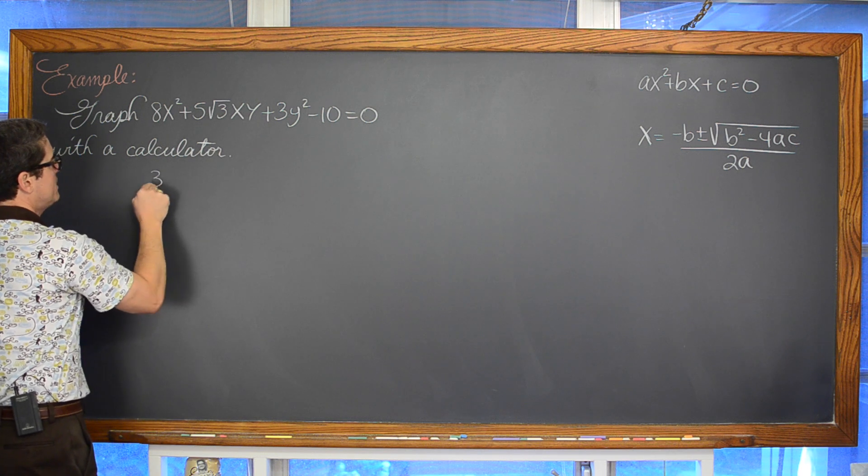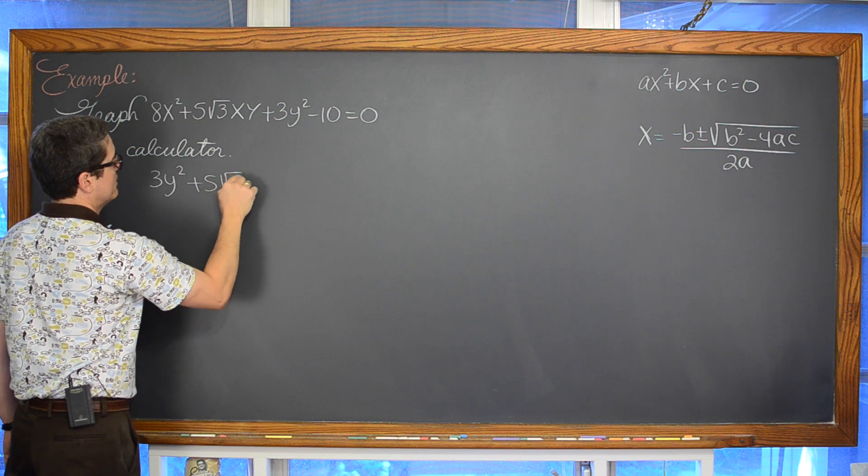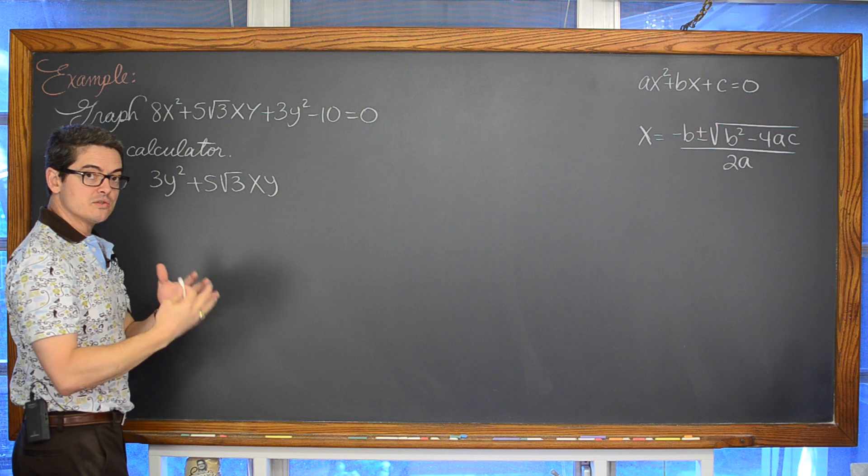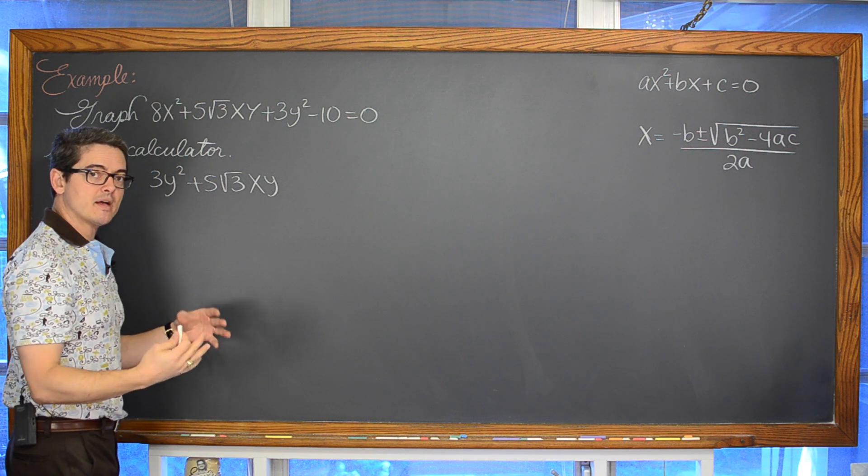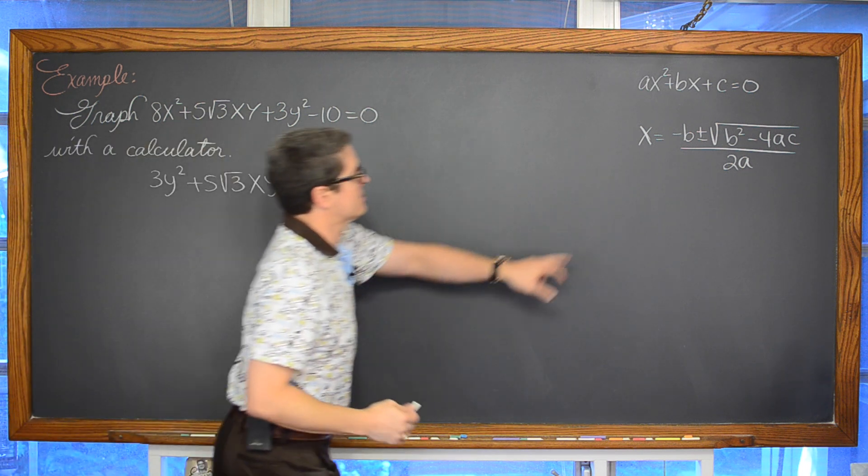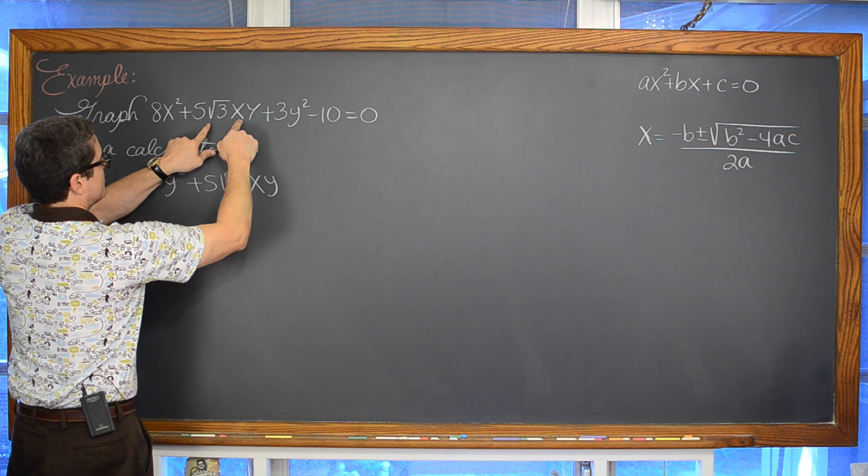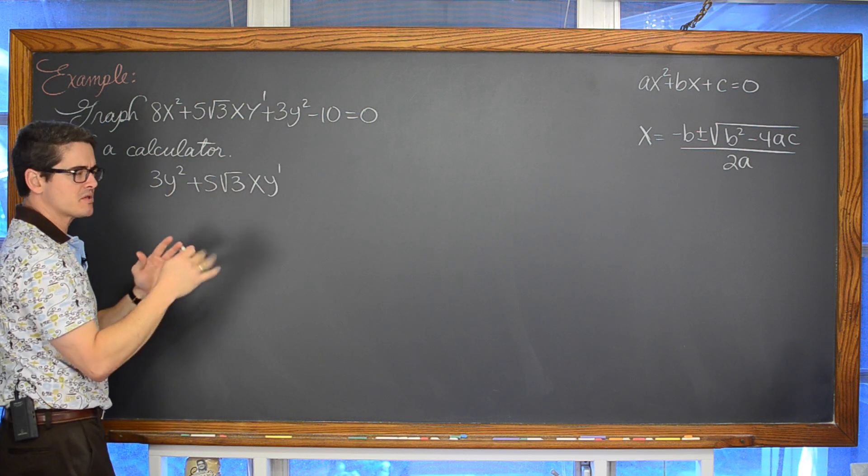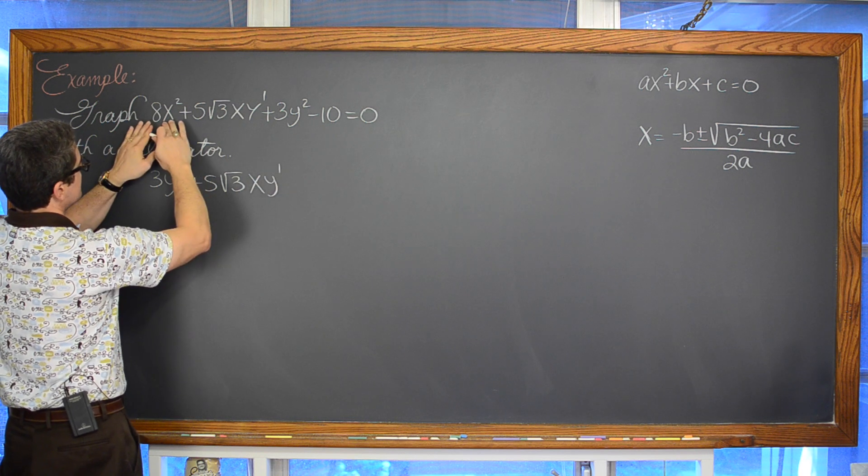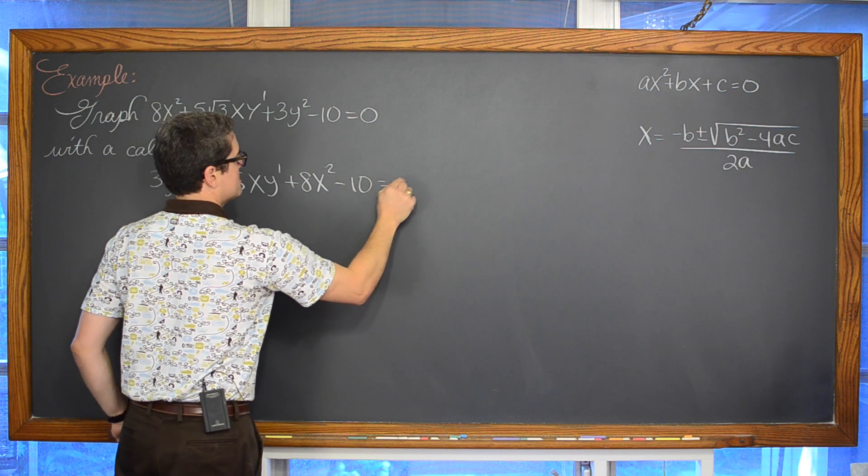So we are going to write 3y² + 5√3xy. So I am going to, you know, wanting to write this so that it is y in terms of x. I want to write this so that there is only one variable of y and it is isolated just like this x is here. I am going to put that squared term first. I am going to put this single degree term first. I am just focusing on the y and then we are going to write everything else off to the side. So we have + 8x² - 10 = 0.